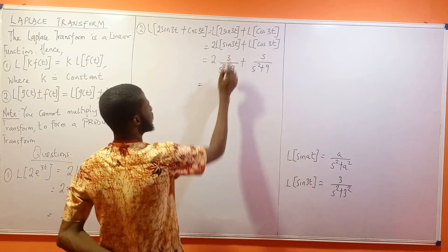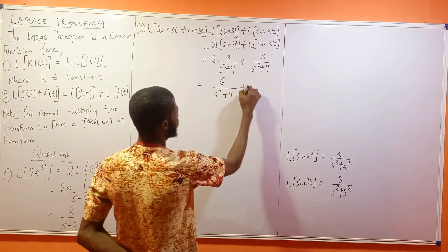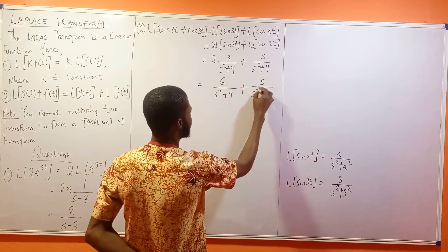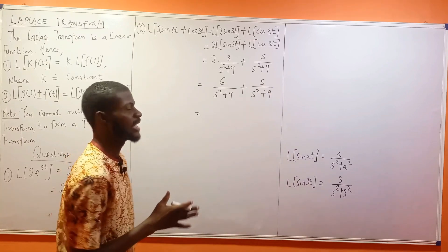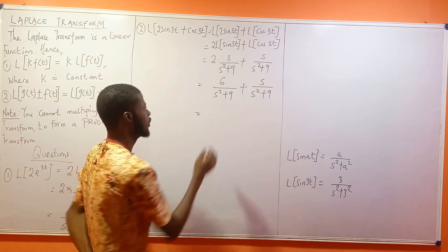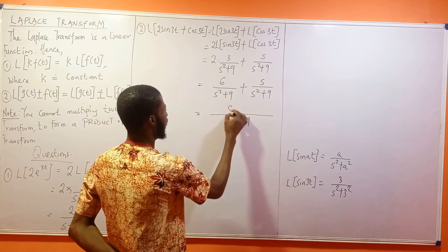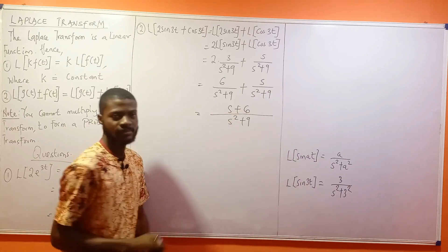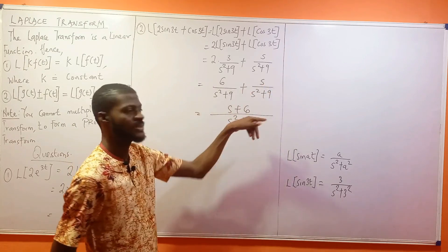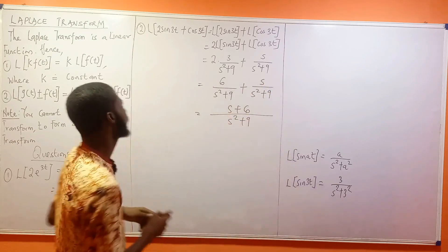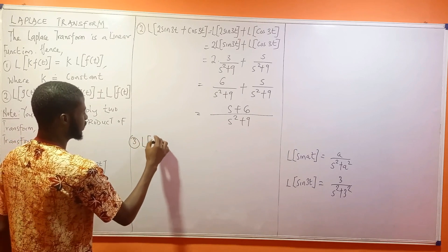So 2 times 3 gives 6 over (s² + 9), then plus s over (s² + 9). The denominators are the same, so combining gives (s + 6) over (s² + 9). That's the answer for question 2.